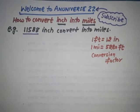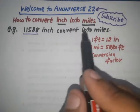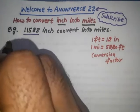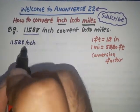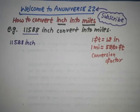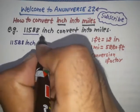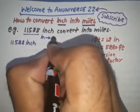So what we have is 11,588 inches and we need to convert into miles. We write 11,588 inches. According to the conversion, we need to convert firstly inches into feet, and then feet into miles.